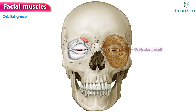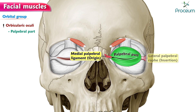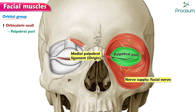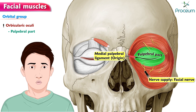Orbital group. Orbicularis oculi, palpebral part. Origin is medial palpebral ligament. Insertion is lateral palpebral raffae. Nerve supply is the facial nerve — in fact, all the facial muscles are supplied by the facial nerve. Function: closes the eyelids gently.